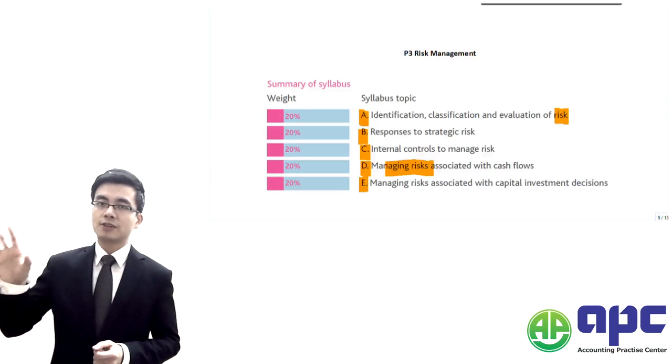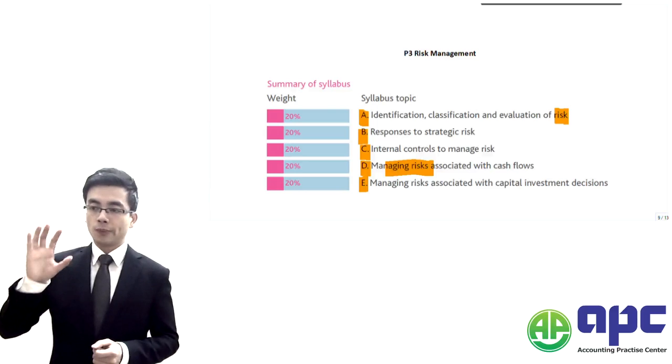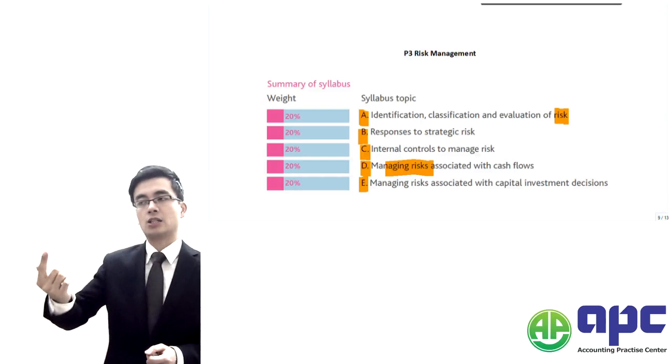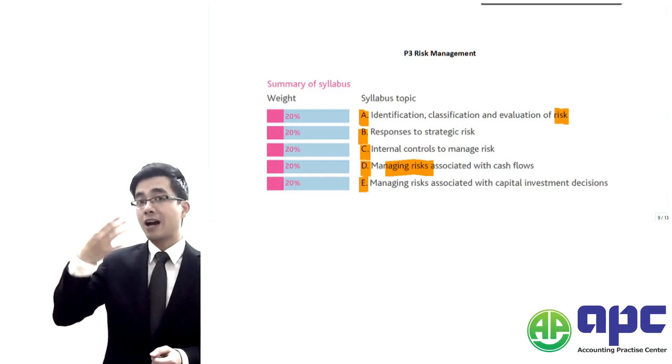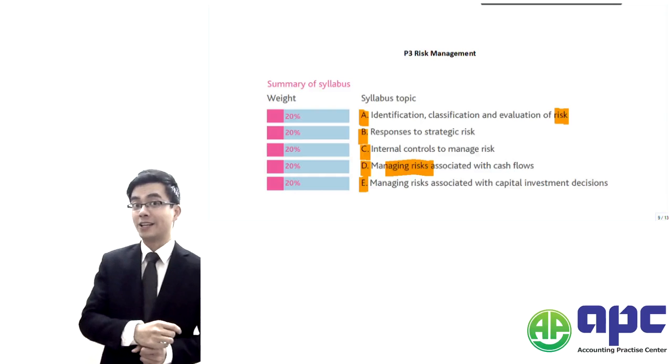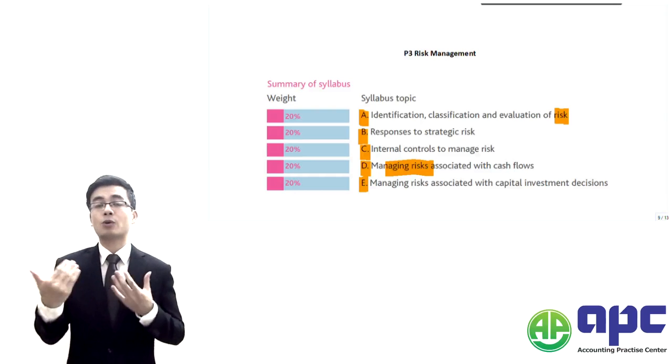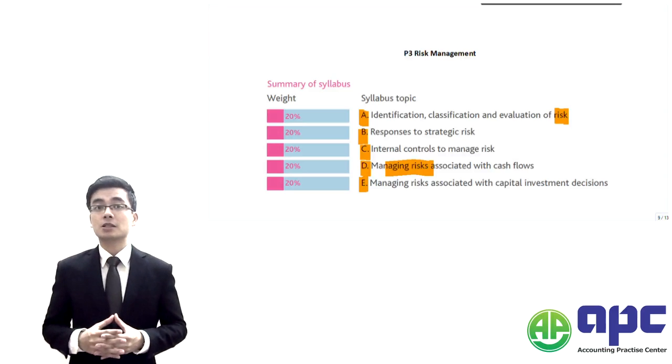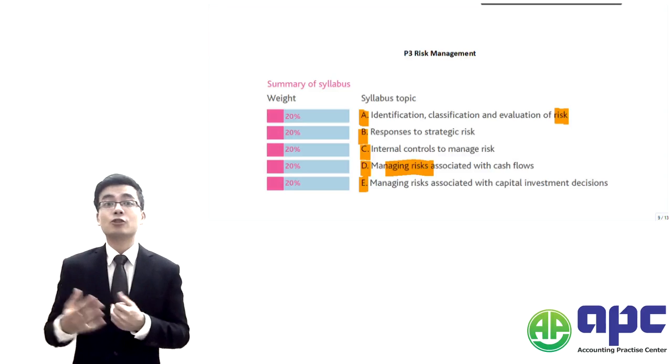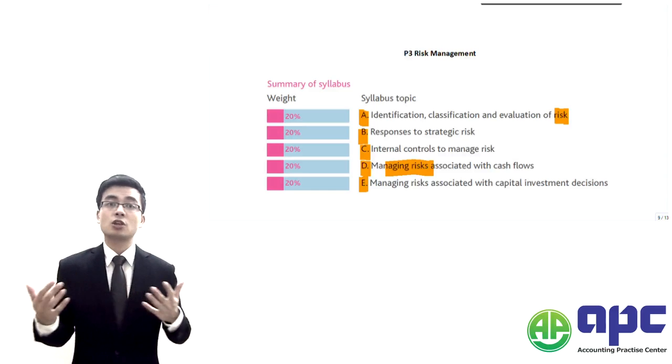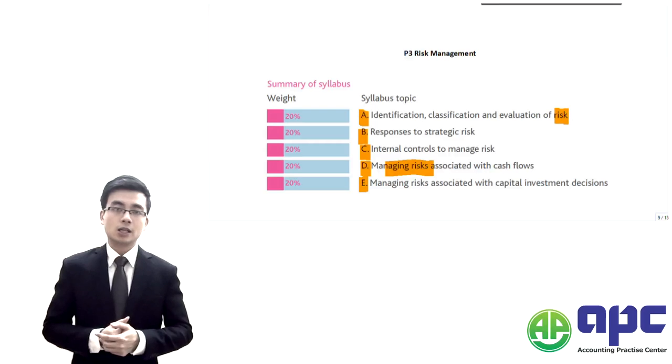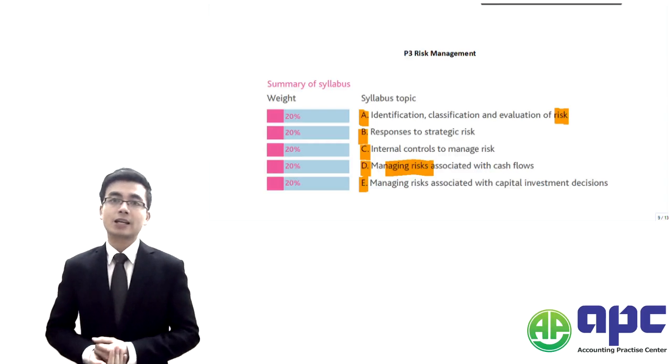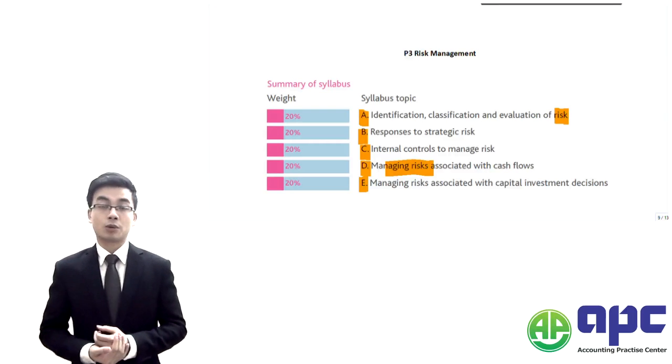For the interest rate risk management, we're going to see if there's an interest rate change so that we have to spend more money borrowing from the banks, and that will impact the cash flow. How are we going to manage that risk? Maybe we're going to use the interest rate futures contract or the forward rate agreement. Those will be included in section D. There's a little bit of technical calculations that we're going to deal with.